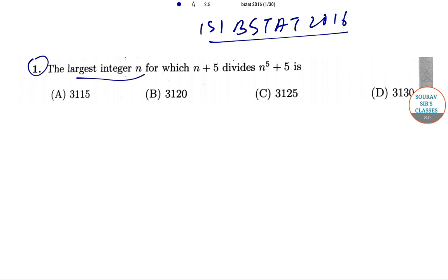We need to find the largest integer n for which n+5 divides n^5+5. The options are 3115, 3120, 3125, and 3130.